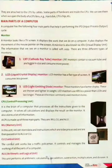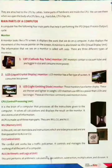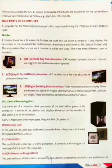CPU has three parts which perform these three functionalities. The first is the memory unit. In this unit, we can store data and instructions which are to be processed and are then passed on to ALU or CU. We store all the files or instructions temporarily on the memory unit for making calculations. Later, when needed, these temporarily stored data are moved to ALU or CU for further processing. The final output can be stored in any permanent storage device like a pen drive, hard disk, etc.